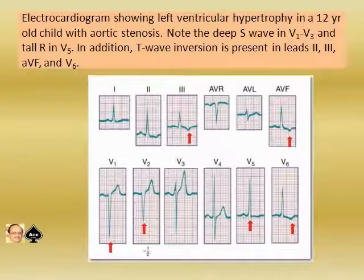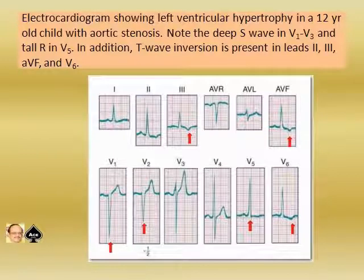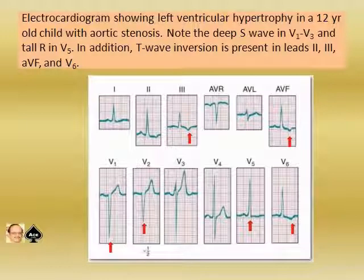I am showing the ECG of a case of left ventricular hypertrophy in a 12-year-old child with aortic stenosis. Note the deep S wave in V1, V2, V3 and tall R in V5. In addition, T wave inversion is seen in leads II, III, aVF, and V6.